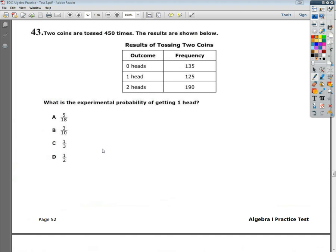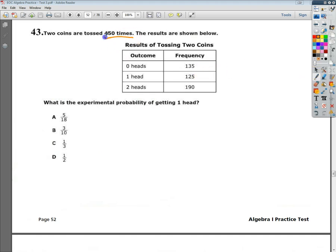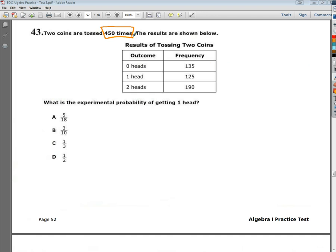The question says two coins are tossed 450 times. That's an important feature to this question because that's my total. So 450 times is important. The results are shown below.